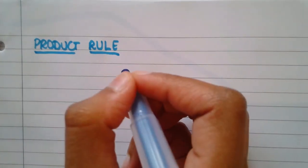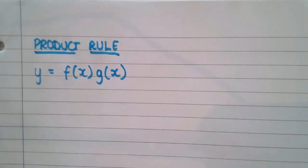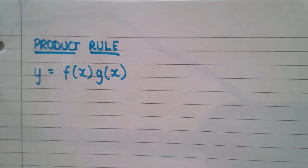Just bearing in mind what the product rule is, and that is where two functions are being multiplied. So if y equals f of x g of x, which is where the two functions are being multiplied,